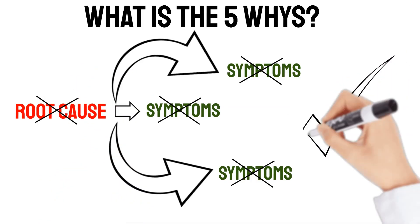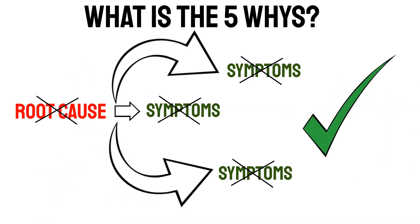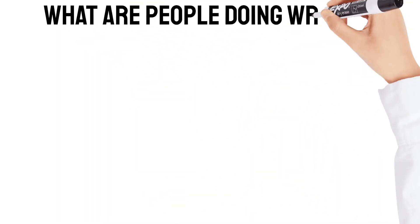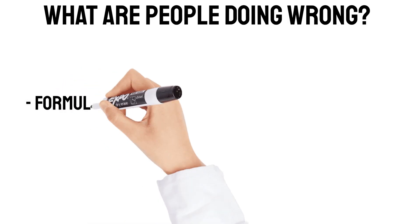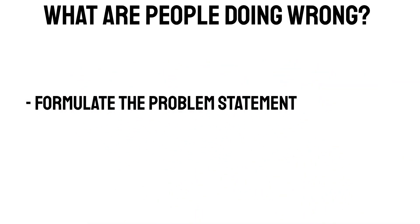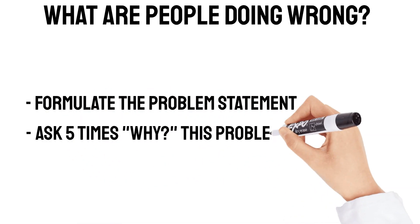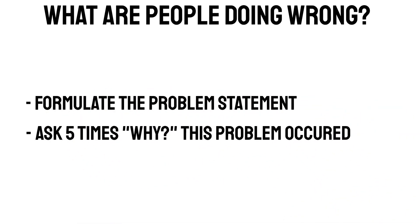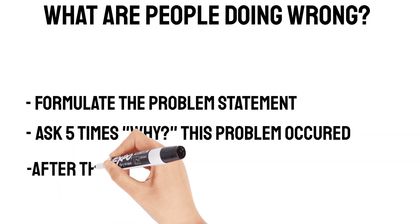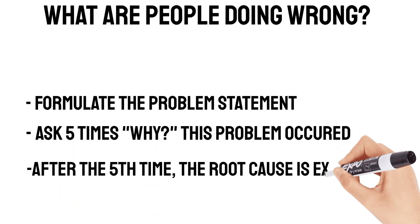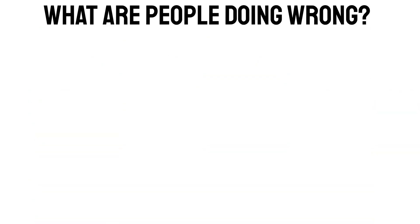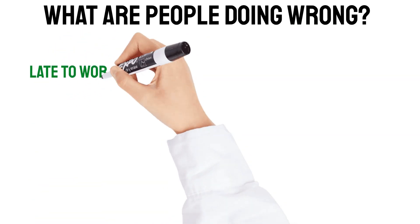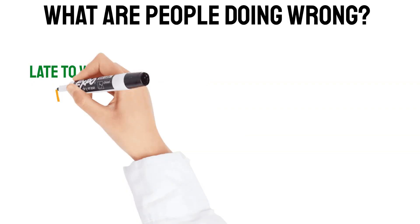After clarifying what the 5 whys root cause analysis is, let's jump to how people use it. I will show you the generic steps and afterwards we will do an example together. The first step is that people who use the 5 whys formulate the problem statement. Then they question it 5 times with a why. And after the 5th time, people think they have identified the root cause. Let's use this technique with an example — being late for work. So the problem statement is: you are late for work.